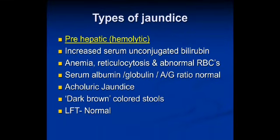There are three types of jaundice. Pre-hepatic jaundice is caused by excessive breakdown of RBCs — hemolysis. The liver cannot conjugate bilirubin fast enough, so the concentration of unconjugated bilirubin increases in the blood. There is increased serum unconjugated bilirubin, resulting in anemia, reticulocytosis, and abnormal RBCs. The serum albumin ratio is normal, and this jaundice does not cause discolored stools — it is acholuric, with dark-colored urine and liver function tests normal.